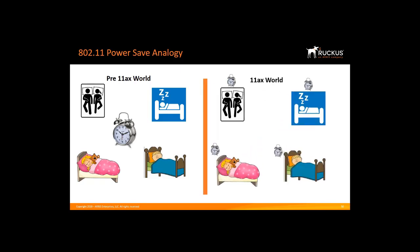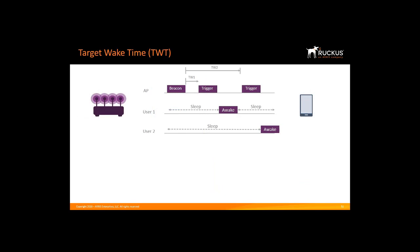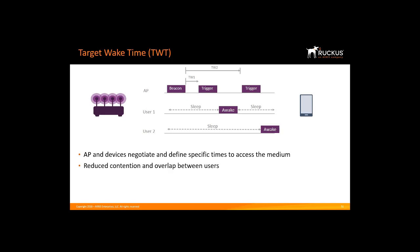11ax is giving one alarm clock to each client — a programmable function depending on your traffic pattern. Target Wake Time enables devices to determine when and how frequently they will wake up to send or receive data. This allows 11ax APs to effectively increase device sleep time and significantly conserve battery life, a feature that is particularly important for the IoT. In addition to saving power on the client device side, Target Wake Time enables wireless access points and devices to negotiate and define specific times to access the medium, helping optimize spectral efficiency by reducing contention and overlap between users.